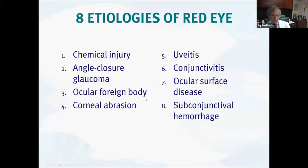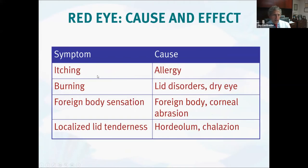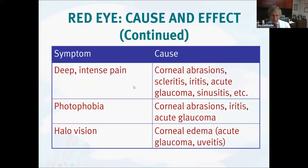A brief review of the red eye: chemical injuries, angle-closure glaucoma, foreign bodies, corneal abrasions, uveitis, conjunctivitis, and ocular surface disease like dry eye or subconjunctival hemorrhage are all common causes. You can sort them out based on symptoms: itching most commonly suggests allergy; burning more commonly an eyelid disorder like blepharitis or dry eye; foreign body sensation suggests a foreign body, corneal abrasion, or dry eye; localized lid tenderness can be a chalazion or hordeolum; deep intense pain suggests scleritis, iritis, or acute glaucoma; and halos around lights most classically indicate acute glaucoma.